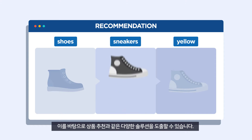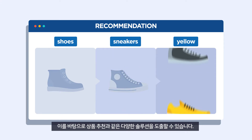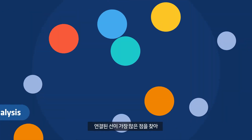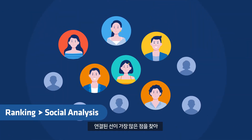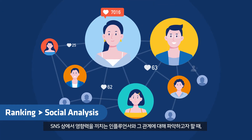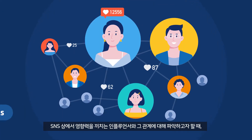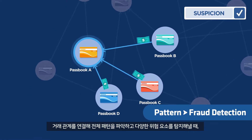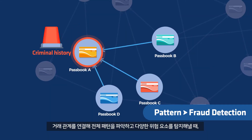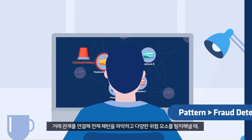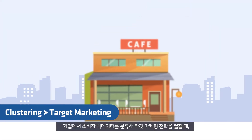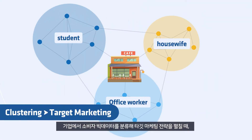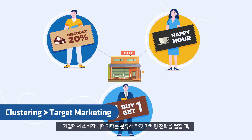As such, various solutions like product recommendations can be drawn. When in search of the most powerful social media influencers and their relationships. When sorting out deals to understand the overall pattern and detecting various risk factors. When clustering consumer data and implementing a target marketing strategy.